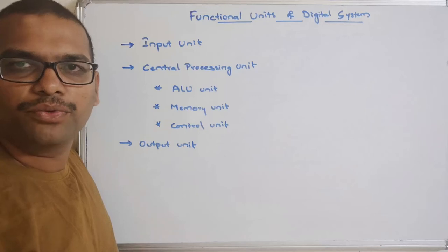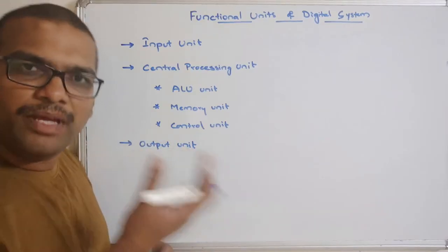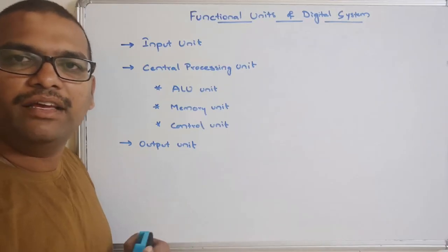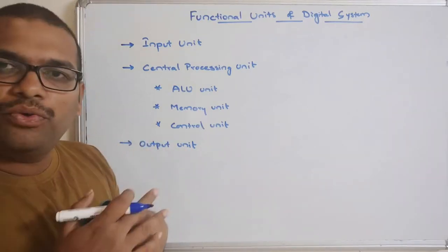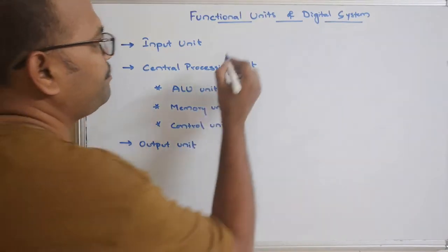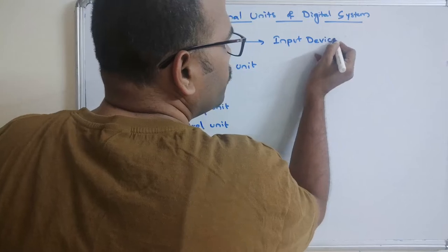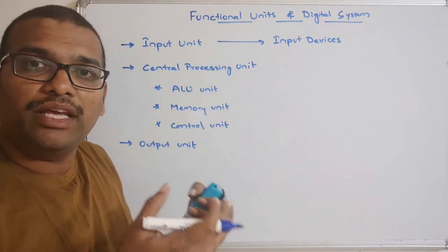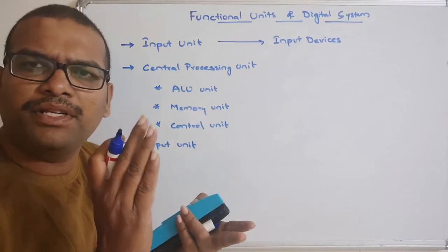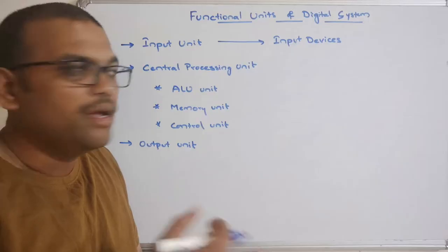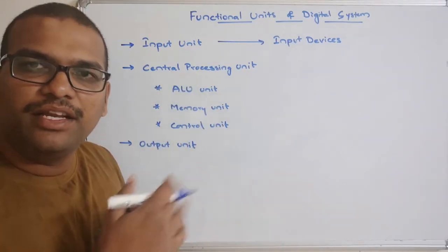The name itself indicates the input unit is responsible for taking input from the user. The user will give inputs through some input device, so the system will take the input and process the data. Input devices — through which we give input to the system — include the keyboard and mouse, which are the best examples.